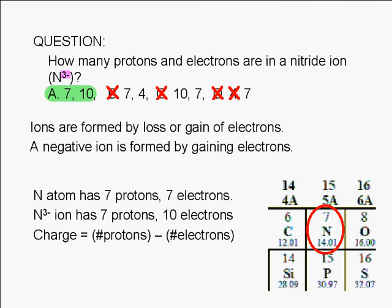Note that the charge of an ion is just equal to the number of protons minus the number of electrons. In the case of the nitride ion, 7 minus 10 equals negative 3.